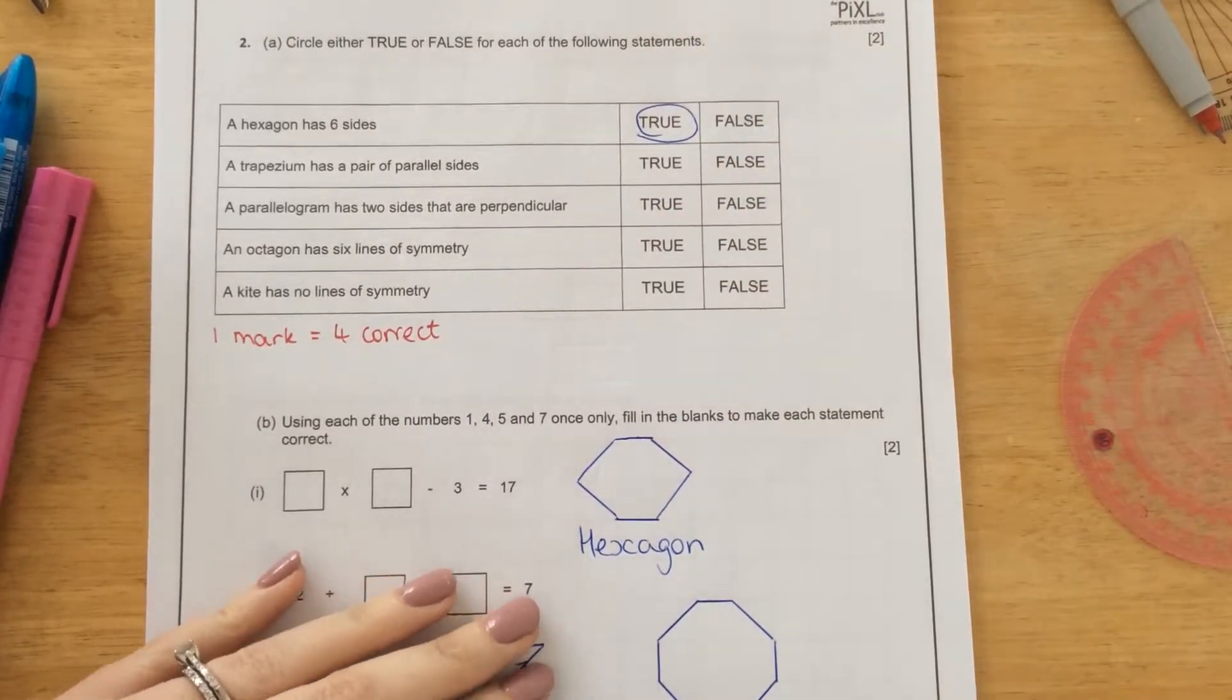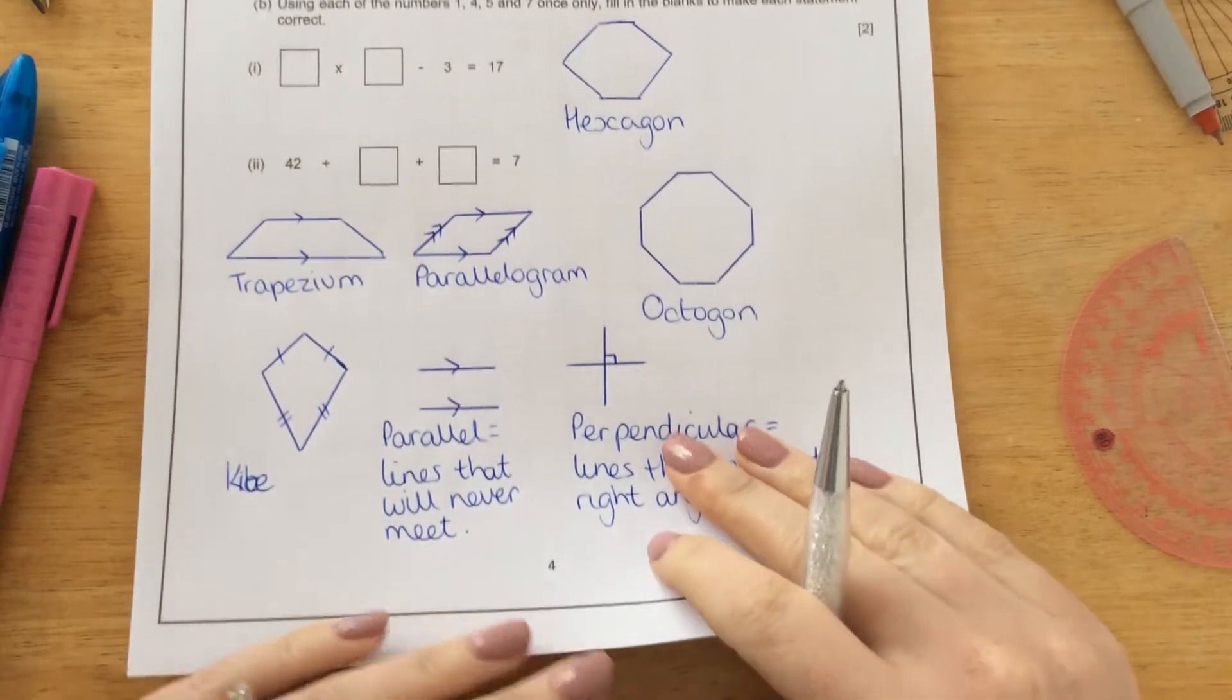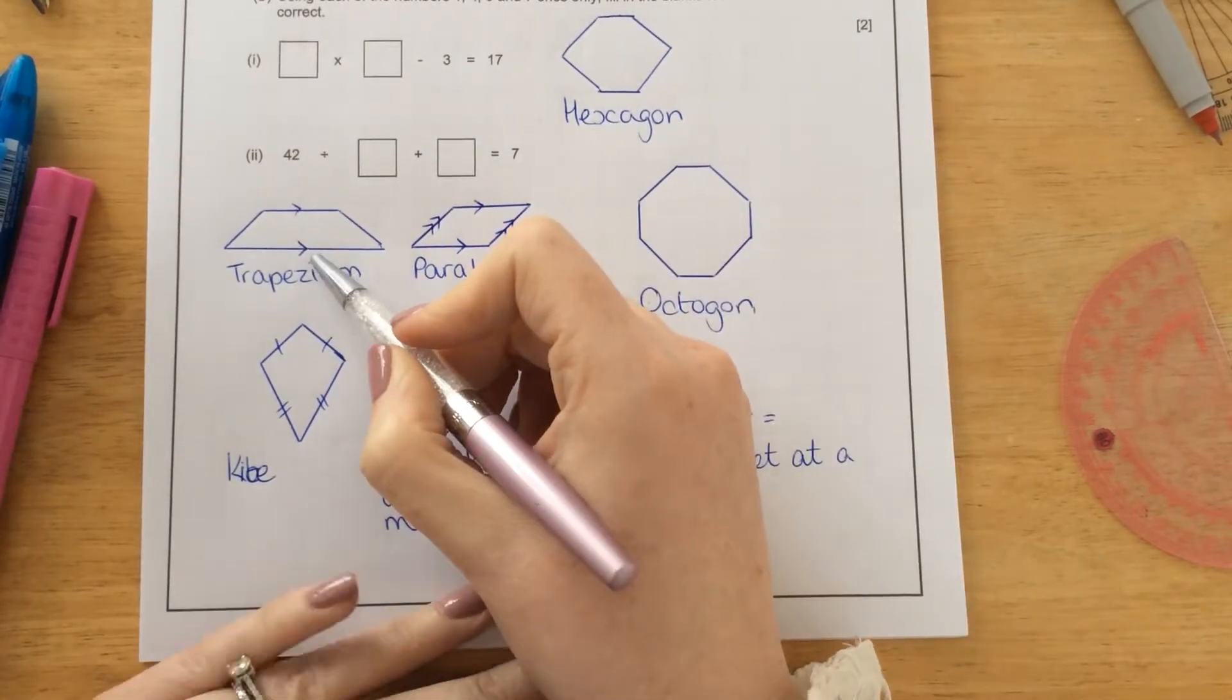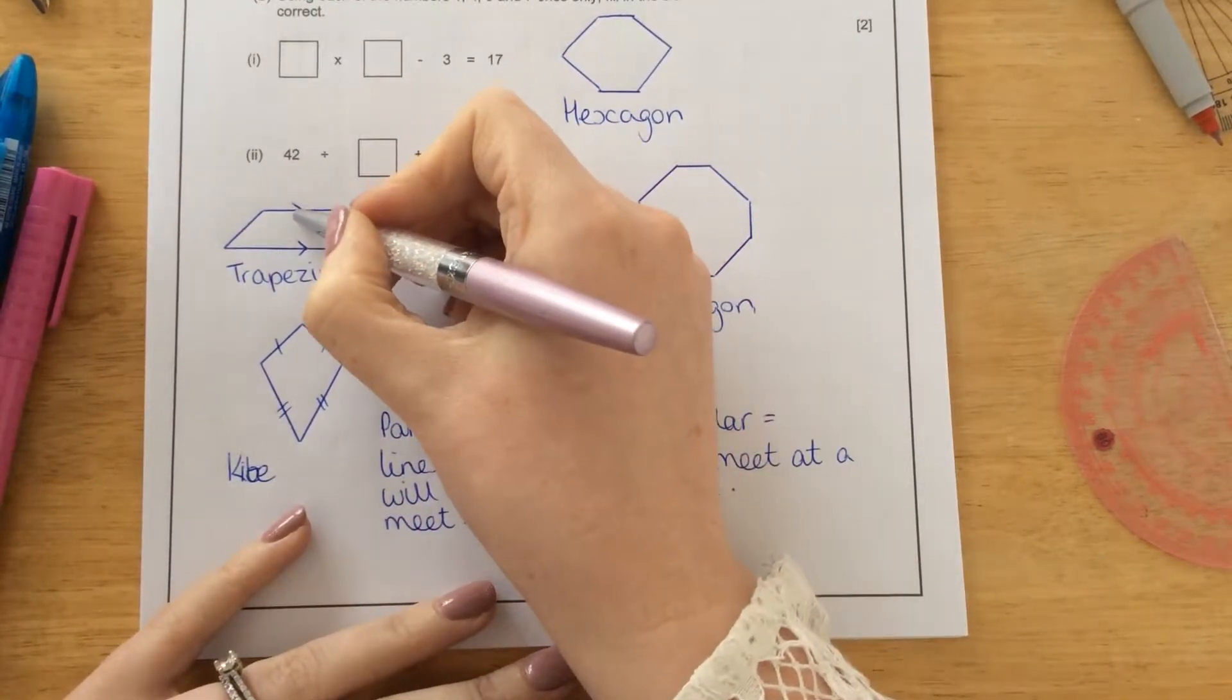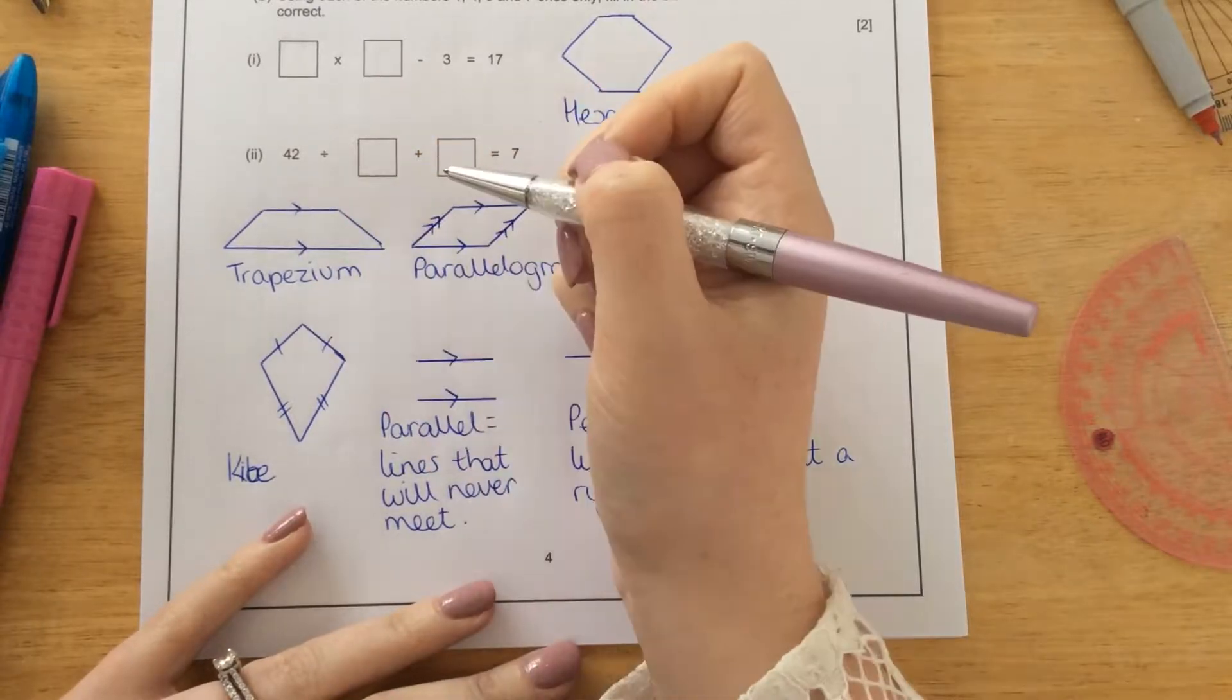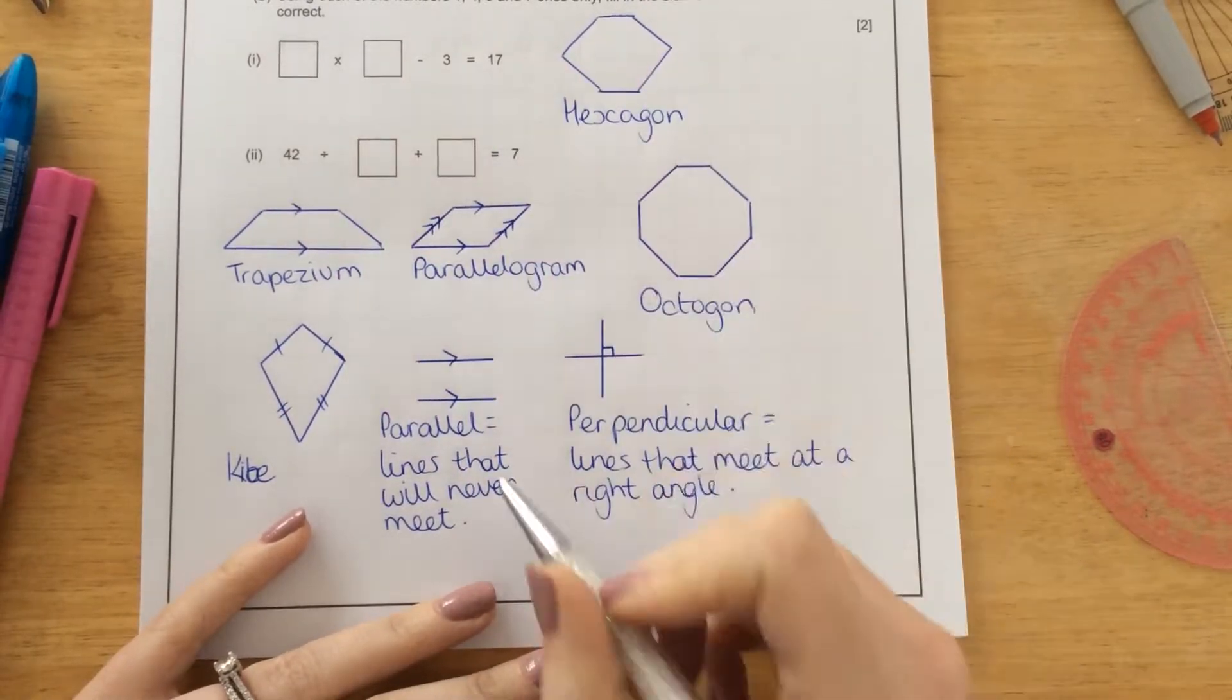A trapezium has a pair of parallel sides. So a trapezium looks like this and the parallel sides are represented by these little arrows here. And that means they are parallel.